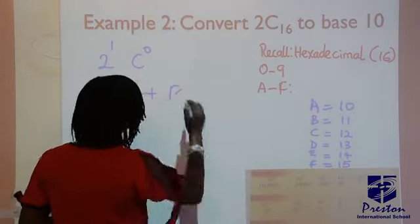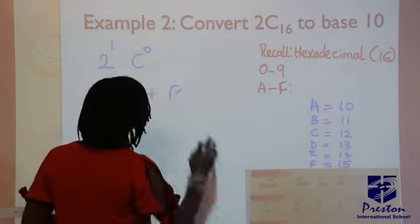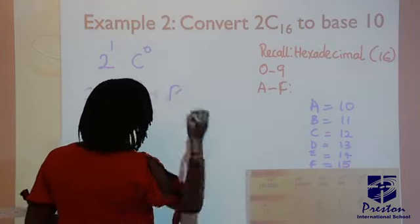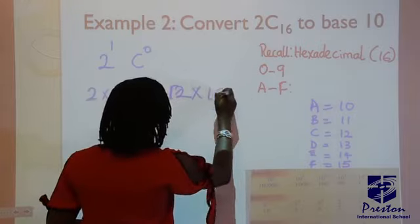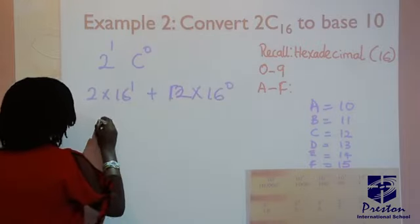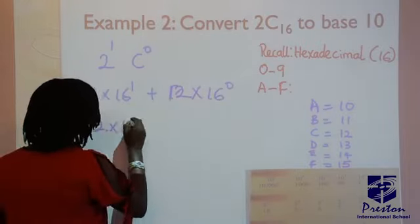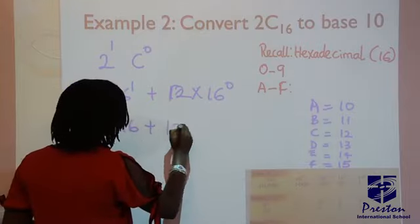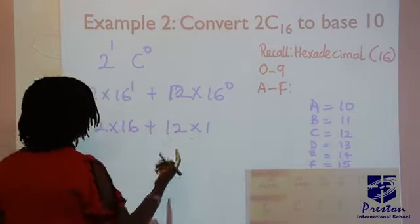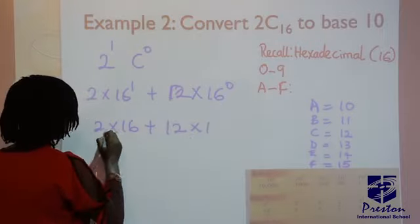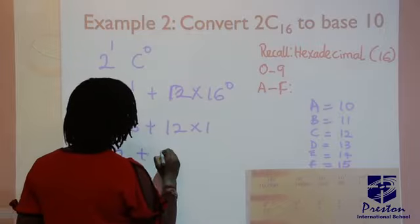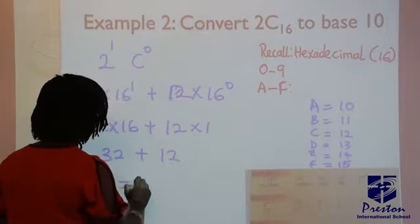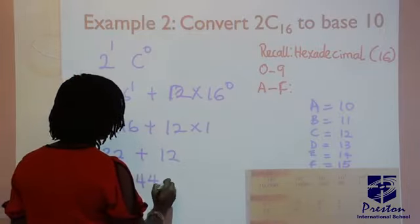What is C now, which is 12? So you put your 12 there: 12 times 16 raised to power 0. There you have 2 times 16 plus 12 times 1. Remember, anything raised to power 0 gives you 1. 2 times 16, that's 32, plus 12 times 1, that's 12. And our final answer here is 44 in base 10.